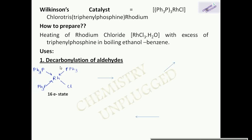Wilkinson's catalyst is in a 16-electron state. The 16-electron state means rhodium has a 3d⁸ 4s¹ configuration, and in this complex it is in the +1 state. So 8 electrons are in the d-shell and 8 electrons are provided by the ligands, giving a total of 16 electrons. According to the 18-electron rule, it tries to complete its 18 electrons.